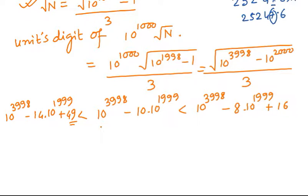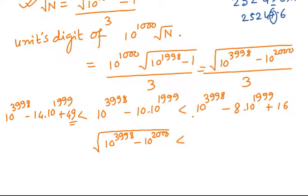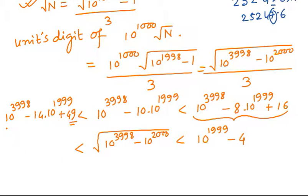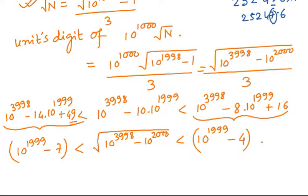We are talking about huge numbers on the order of 10^1999, so 49 makes no significant difference. We can say that √(10^3998 - 10^2000) is sandwiched between two perfect square expressions: it is more than (10^1999 - 7)² and less than (10^1999 - 4)². After taking the square root, the square is removed, giving bounds of (10^1999 - 4) and (10^1999 - 7).